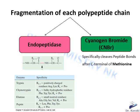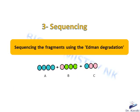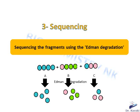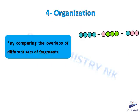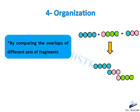The third step is the sequencing of the fragments using Edman degradation, which is used to determine the amino acid sequence of each peptide. The fourth step is to organize these fragments by overlapping them — looking for common amino acids to overlap the chains — to finally obtain the whole sequence in order.